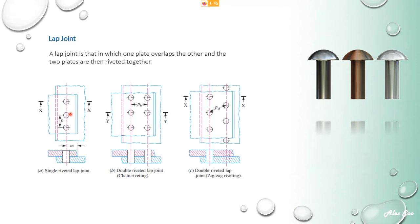These are called lap joints, where you have two plates — one plate on top of the other. There are some technical terms you need to know here for riveted joints. The first one is the pitch: the distance from the center of one rivet to the center of the next rivet. Then you have back pitch, which is the horizontal distance from center to center. Then diagonal pitch, which is the diagonal distance from the center of one rivet to the center of the next.